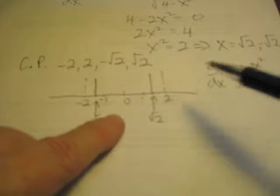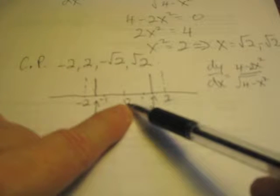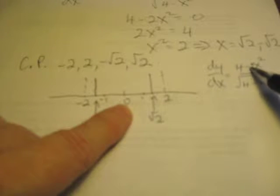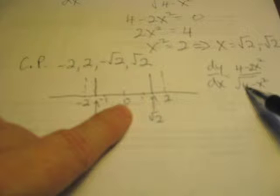The derivative, remember, was 2x squared over 4 minus x squared. Now, clearly what happens at 0? Well, when x is 0 we get 4 over the square root of 4, 4 over 4 which would be 2, which is positive.